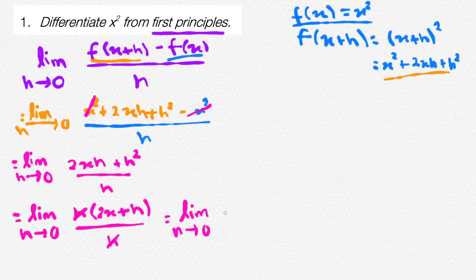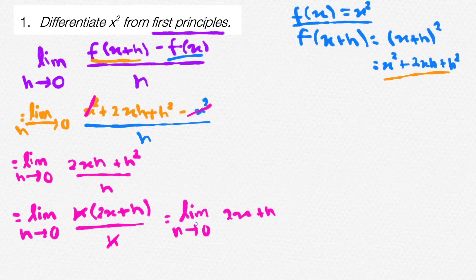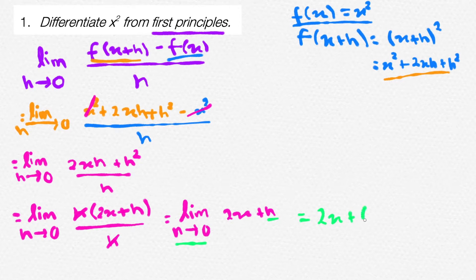Looking at the limit, it says as h approaches 0. Since there is only one h remaining in our term, we can simply sub in 0. This will give you 2x plus 0, since we are subbing in 0 for the value of h. So we will get a final answer of 2x.